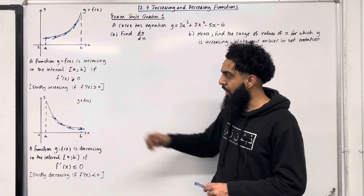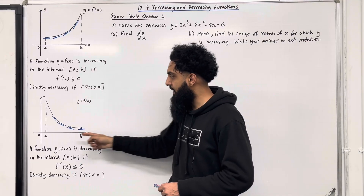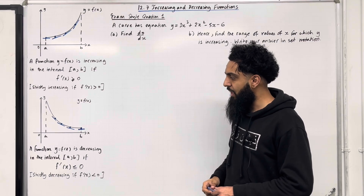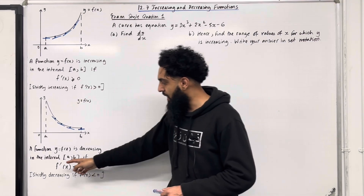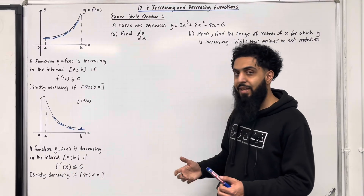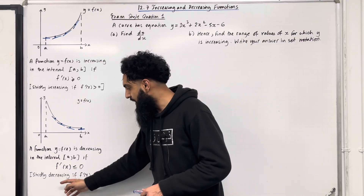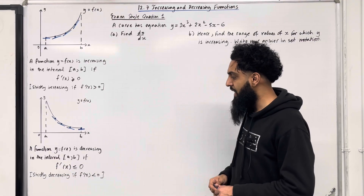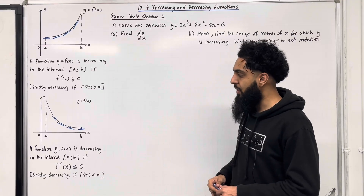Consider the following coordinate grid. I've sketched the curve y = f(x) in the interval a to b. A function y = f(x) is decreasing in the interval a to b if the gradient function f'(x) is less than or equal to 0 for any x value in the interval a to b. We say it is strictly decreasing if f'(x) is less than 0 for any x value in the interval a to b.